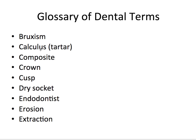Bruxism refers to an unconscious habit of grinding or clenching the teeth, which often happens when a person is sleeping or during the day if related to stress. Calculus is another name for tartar — a hard deposit of minerals coated with bacterial plaque that can build up on the teeth and cause gum inflammation. It's basically mineralized dental plaque and is scraped off when a dentist or hygienist cleans your teeth during a routine cleaning. Composite refers to a tooth-colored filling material used to repair or cosmetically enhance teeth, made up of several types of resin-based substances.